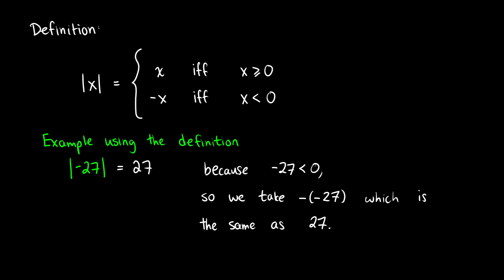There are some nice properties of this that we'll look at, but I want to show you the formal definition first. Because this is a piecewise function, which means there are different conditions on what the value is. We can say that the absolute value of x, where x is a number, is equal to x if x is greater than or equal to zero. So this means that if you have a positive number like 10, the absolute value of 10 is just going to be 10 itself. If you take the absolute value of zero, it's just going to be zero itself.